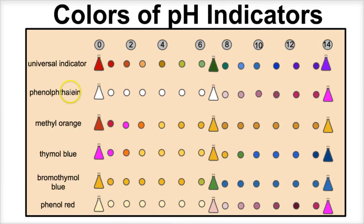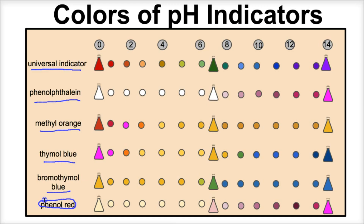This chart summarizes several different types of pH indicators. We have universal indicator, phenolphthalein, methyl orange, thymol blue, bromothymol blue, and phenol red. Looking at this chart, we can see the different colors they turn at different pH levels. For example, universal indicator turns red or reddish at lower pHs of 0 to 2, and at pHs of 12 to 14 it turns purple.